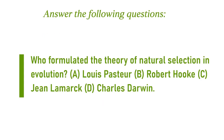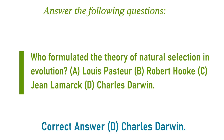Question five: Who formulated the theory of natural selection in evolution? Options are: A) Louis Pasteur, B) Robert Hooke, C) Jean Lamarck, D) Charles Darwin. We considered two theories — one from Lamarck and one from Darwin. The theory of natural selection was put forward by D — Charles Darwin.